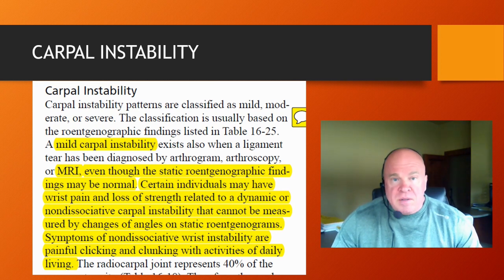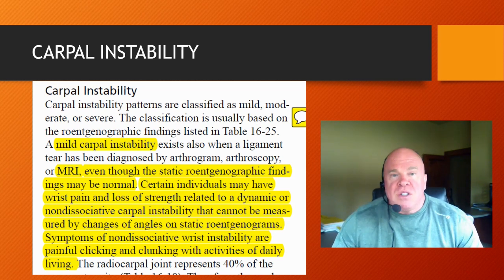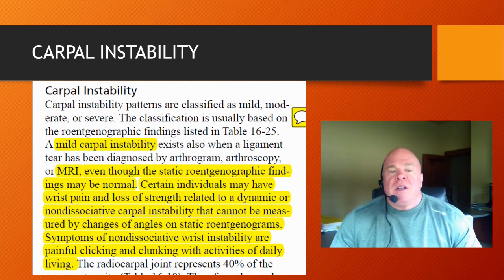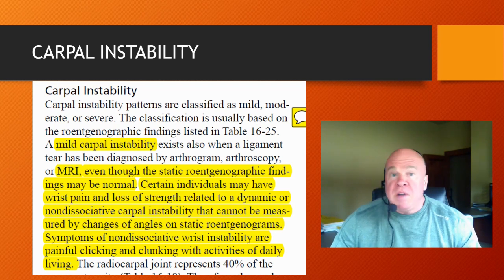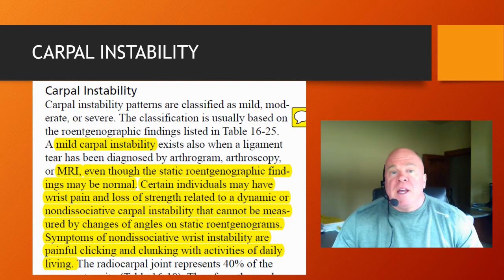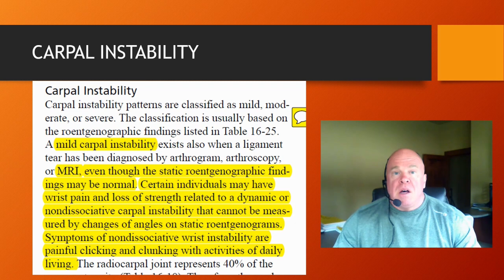We're going to tailor the remainder of this program according to the descriptions and classifications used by the AMA Guides. According to section 16.7 — the Other Disorders section of chapter 16 — the AMA Guides tell us that carpal instability patterns are classified as mild, moderate, or severe. Each one of those has its own permanent impairment rating, with mild, moderate, and severe corresponding to small, medium, and larger permanent impairment ratings describing increasing severity of symptoms, increasing impact on activities of daily living, and increasing laxity and instability of the carpus.